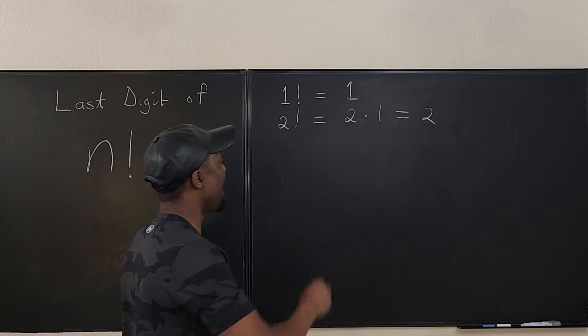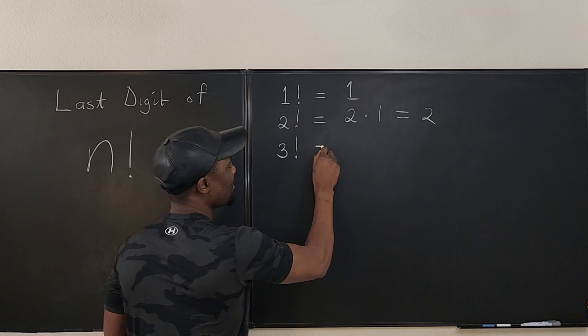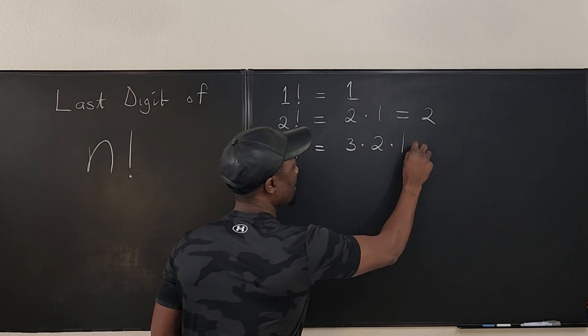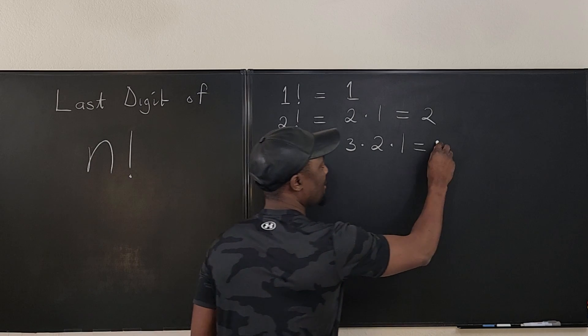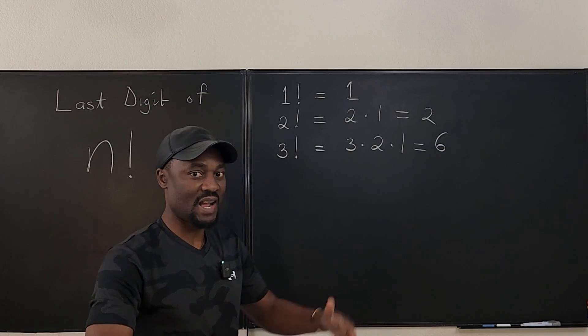Let's take it a bit higher. So what about three factorial? Well, three factorial is going to be three times two times one, which is going to be six. So the last digit of three factorial is six.